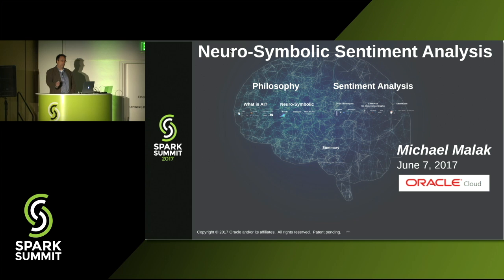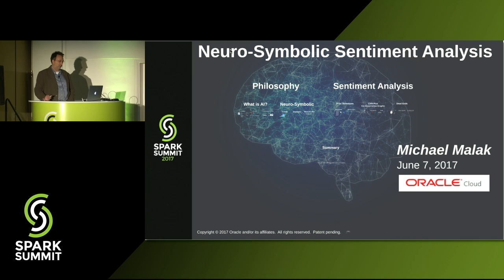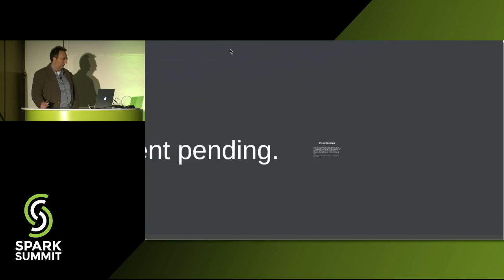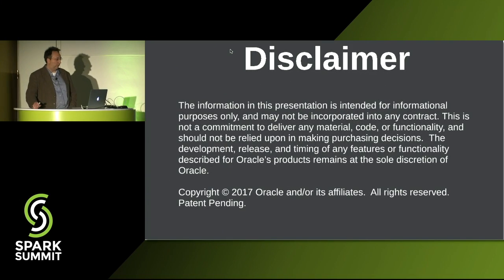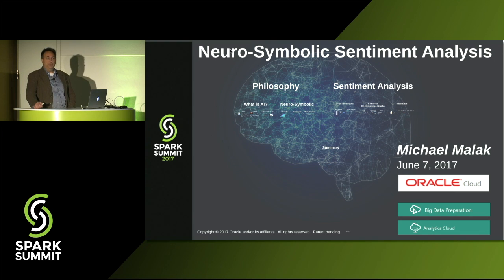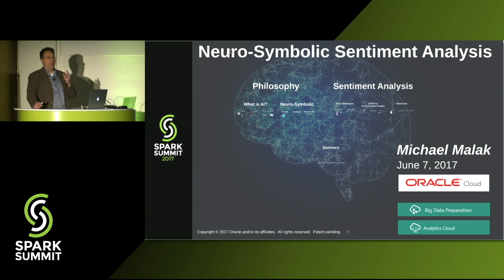Hi, I'm Michael Malak. I work at Oracle over in Colorado on a couple of cloud products that use Spark on the back end. Don't buy any Oracle stock based on what I'm going to present here. I'm going to talk about sentiment analysis using a combination of three technologies: Word2Vec, convolutional neural networks, and co-occurrence graphs. Some of these are neural network based, some are symbolic based, and because of that combination, it falls under the broad umbrella of neurosymbolic computing.